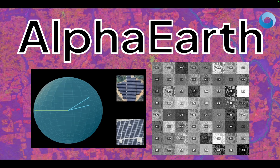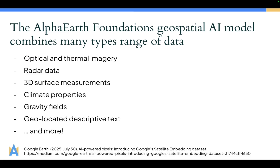Alpha Earth is Google DeepMind's response to this. It's a foundational geospatial model that computes spatial coordinate embeddings for each 10 meter by 10 meter pixel on the surface of Earth. What's key is that the Alpha Earth foundation model combines a range of data — thousands of events, ranging from optical and thermal imagery, radar data, 3D surface measurements, climate properties, gravity field, geolocated descriptive text, you name it — and condenses them into 64 bands called an embedding.